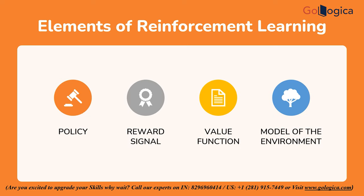What are the elements in reinforcement learning? Reinforcement learning has four primary components: policy, reward signal, value function, and model of the environment. Policy: an agent's behavior at a specific moment in time can be described as a policy. It links the action performed in relation to the perceived state of the surroundings. Since a policy is the only thing that can specify an agent's behavior, it is the fundamental component of reinforcement learning. It could be as simple as a lookup table or a basic function, or it might need more extensive calculations like a search procedure. The policy may be either stochastic or deterministic.